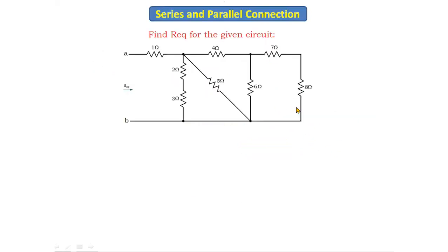Now let's look at one more problem: find the total equivalent resistance for the given circuit. We have to find the total equivalent resistance for this circuit as well. There are many resistors, and we will convert them into one single resistor step by step.